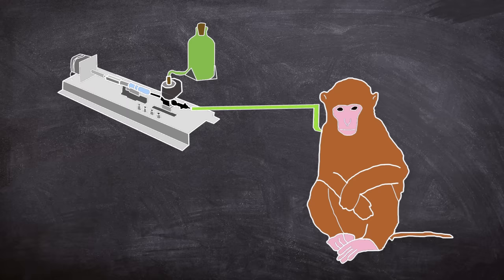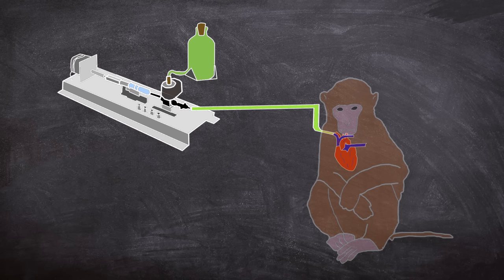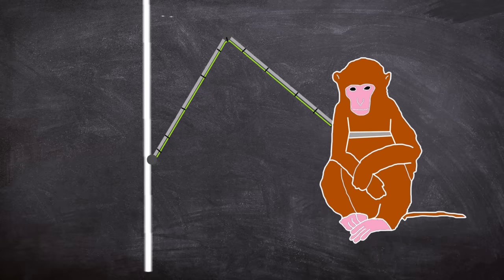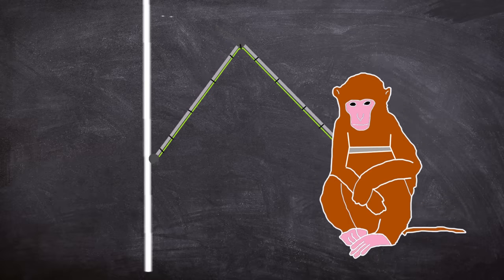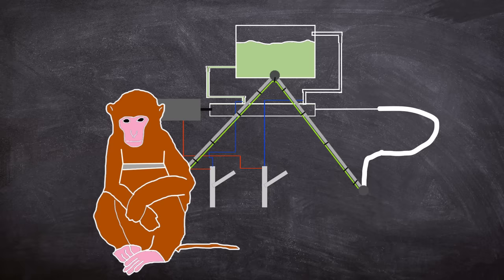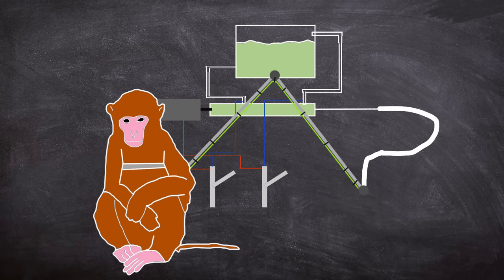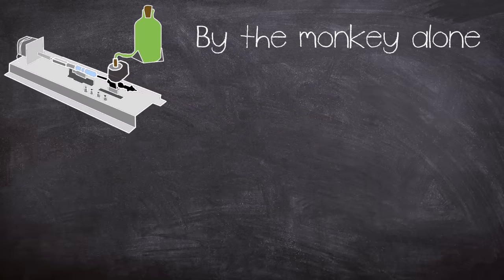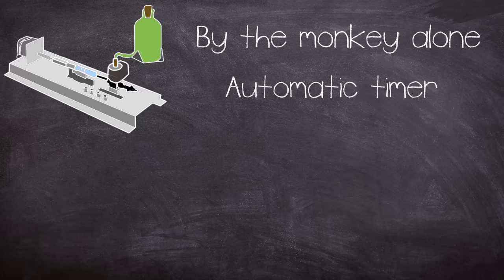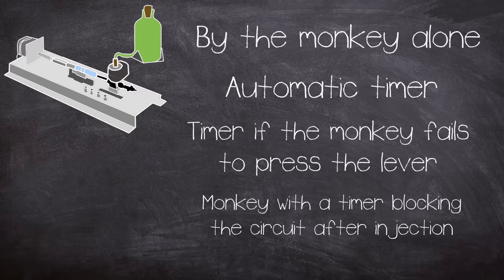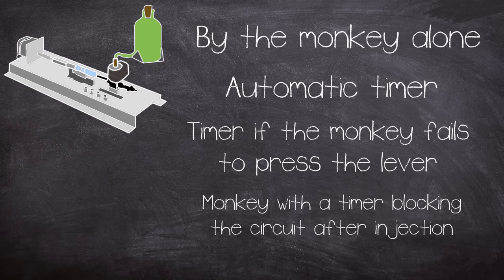The monkeys were intravenously connected to the drug infusion unit via a catheter which terminated at the right atrium of the animal's heart. To hold the animal and catheter together, the monkeys were attached to a metal harness, which itself was attached to a restraining arm which allowed movement around the cubicle. 25 seconds was required to administer the drug, and another 25 seconds was needed to refill the syringe. This helped restrict the number of doses. The machine could administer a dose in 4 different ways: 1 by monkey alone, 2 by automatic timer, 3 by the timer if the monkey fails to press the lever within a predetermined time, and 4 by the monkey with a timer blocking the circuit after injection, preventing the monkey from taking the next injection until predetermined time had elapsed.